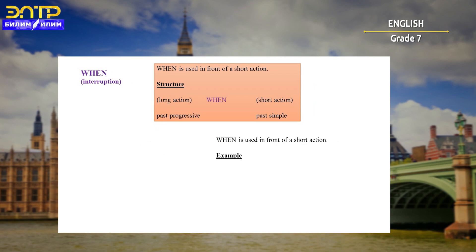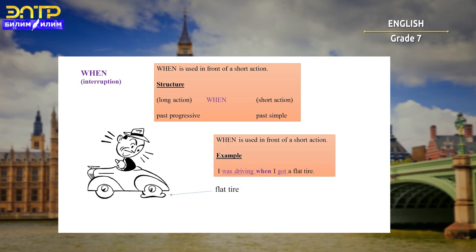We also have the conjunction 'when'. 'When' is used when we describe an action in the past that interrupted another action. The structure is: long action in past progressive + when + short action in past simple. For example: 'I was driving when I got a flat tire.' 'I was driving' is a long action, 'when' marks a specific point, and 'I got a flat tire' is a short action in past simple.